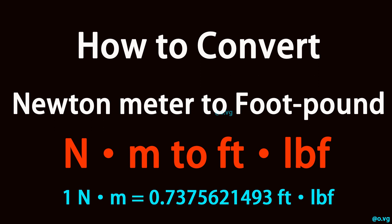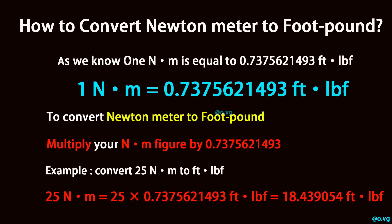How to convert newton-meter to foot-pound. As we know, one newton-meter is equal to 0.7375621493 foot-pound.